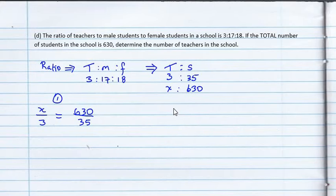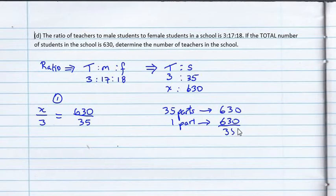Another way we can do this, we can say 35 parts represents an amount of 630. And so, we can move from this to find one part. We represent 630 divided by 35. So, basically, if you look at this as an equation, we divide this side over here by 35, give us 1. Let's divide this side over here by 35 as well. So, 1 part is 630 over 35.